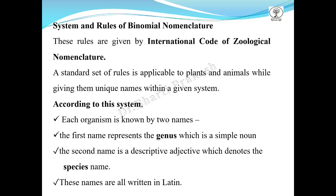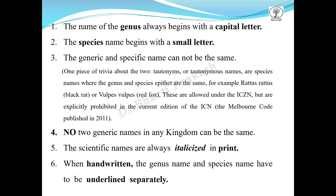The second name is a descriptive adjective which denotes the species name. These names are all written in Latin because Latin is a dead language. The name of the genus always begins with a capital letter since it is a noun, and the species name begins with a small letter.